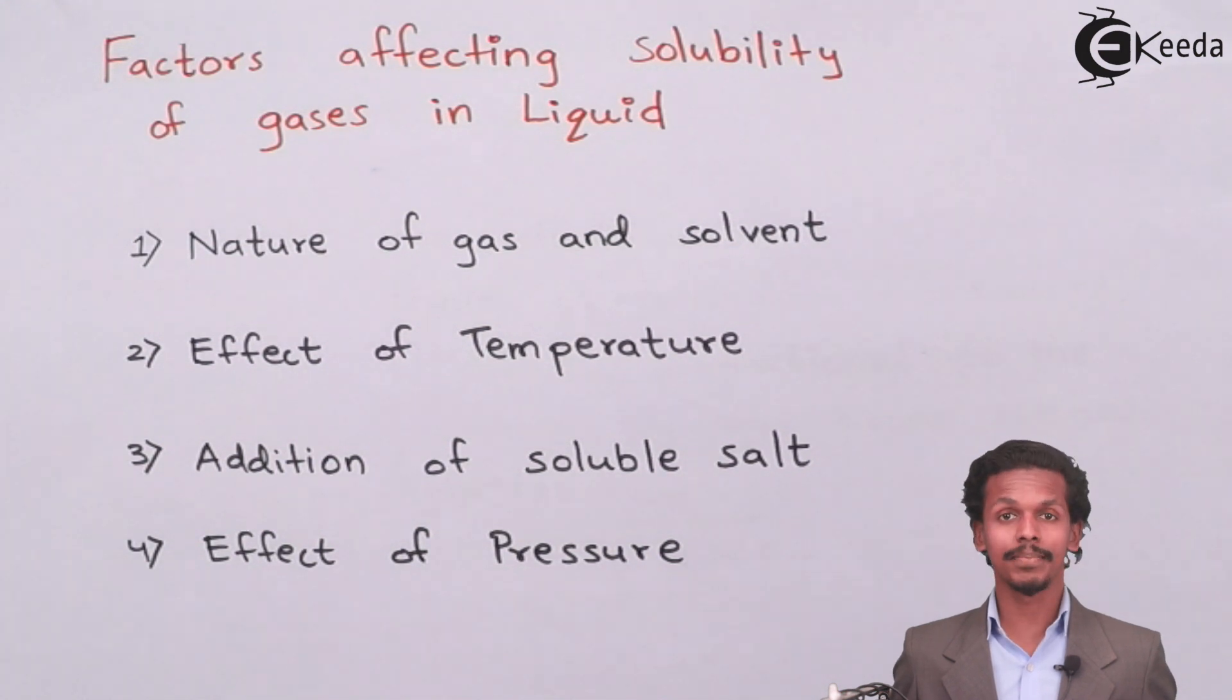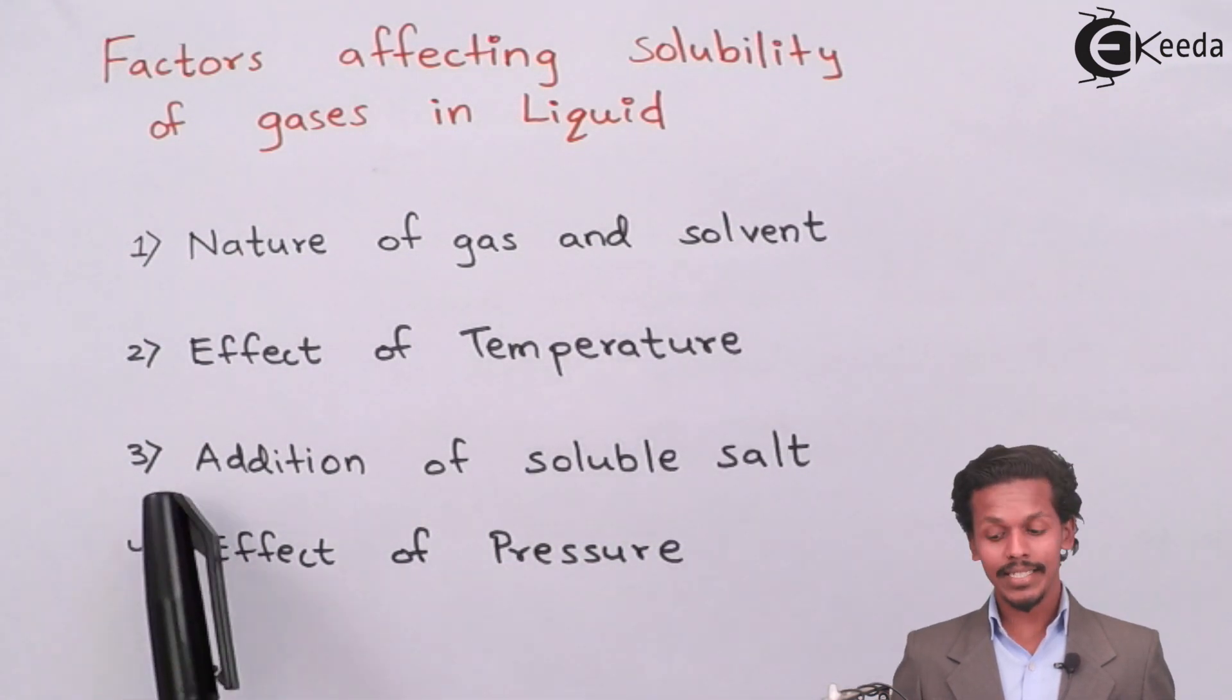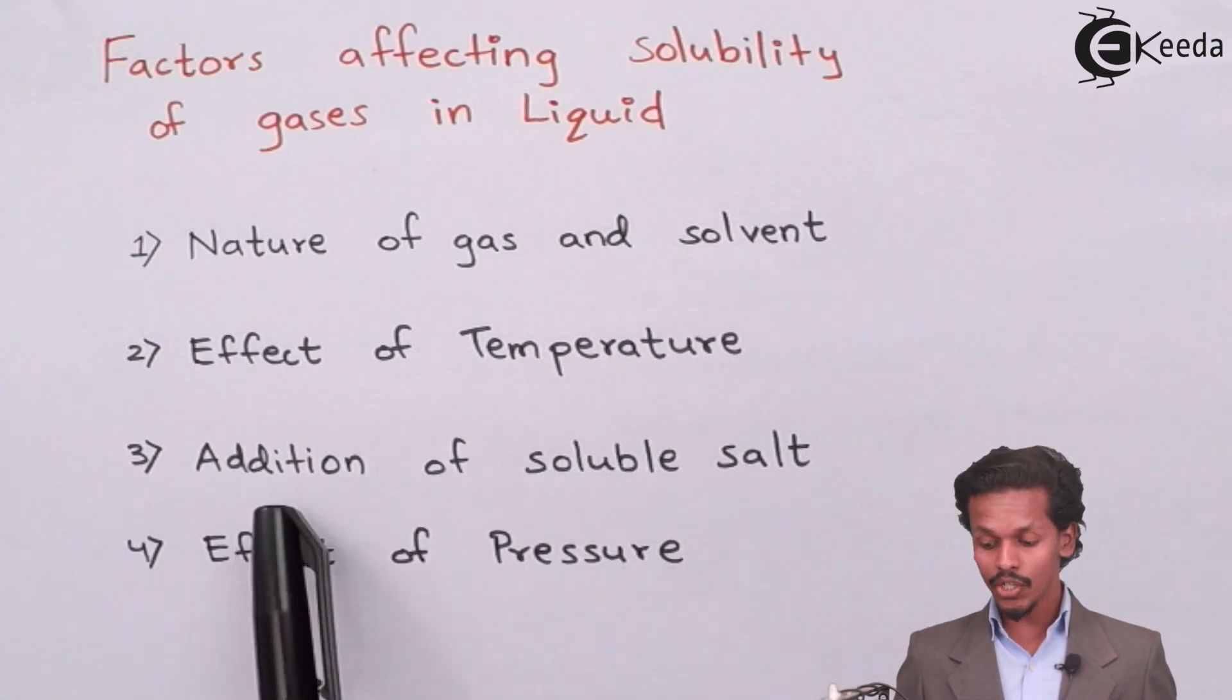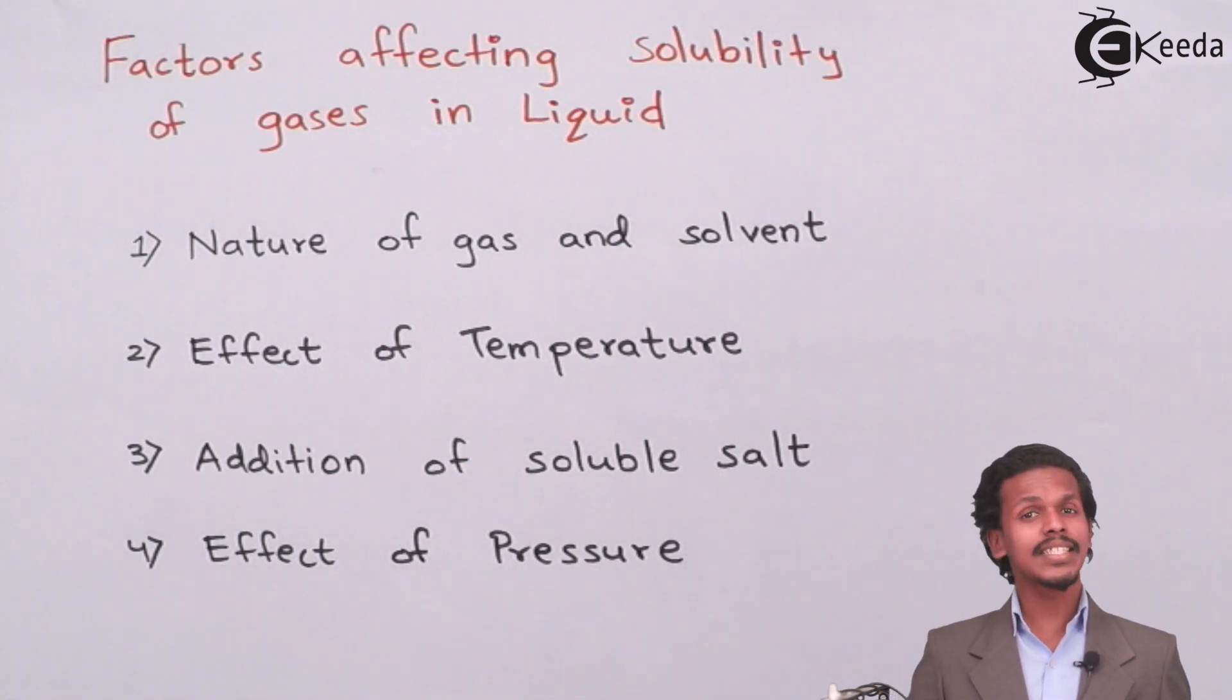So students, as mentioned on your screen, there are four factors that can affect the solubility of gases in liquids: first is the nature of gas and solvent, second is the effect of temperature, third is the addition of soluble salt, and the last one is the effect of pressure. Let us see each factor one by one in detail.